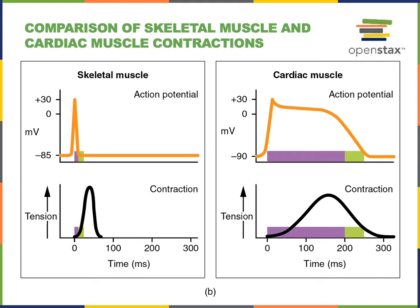The absolute refractory period of the contractile cell action potential occurs for a long period of time throughout the plateau phase, also preventing another action potential from occurring while the cardiac muscle is contracting. This allows time for the heart to relax before another action potential stimulates contraction.